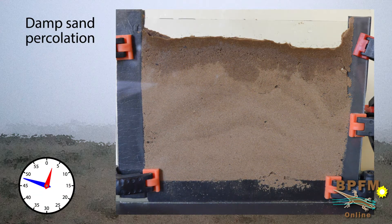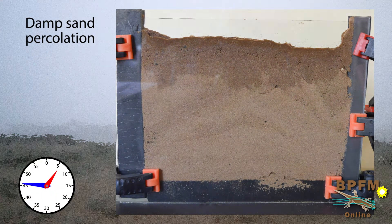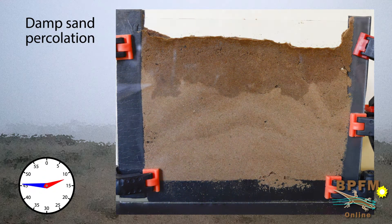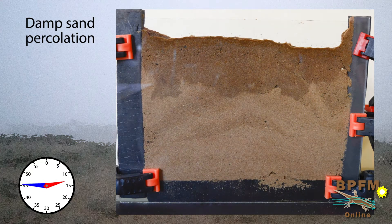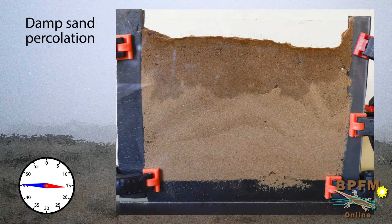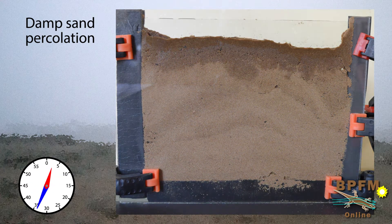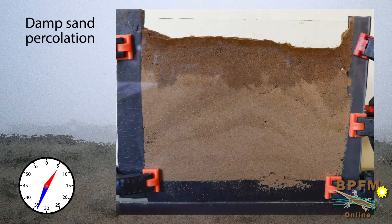Next up is the same experiment, but now with 10 cc's of water percolating through slightly damp sand. It seems that the water percolates downward much more quickly. Let's watch it again — we'll analyze this movement momentarily.